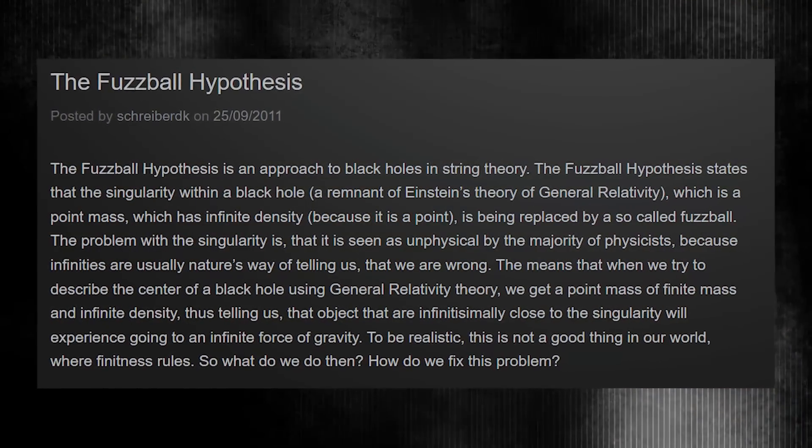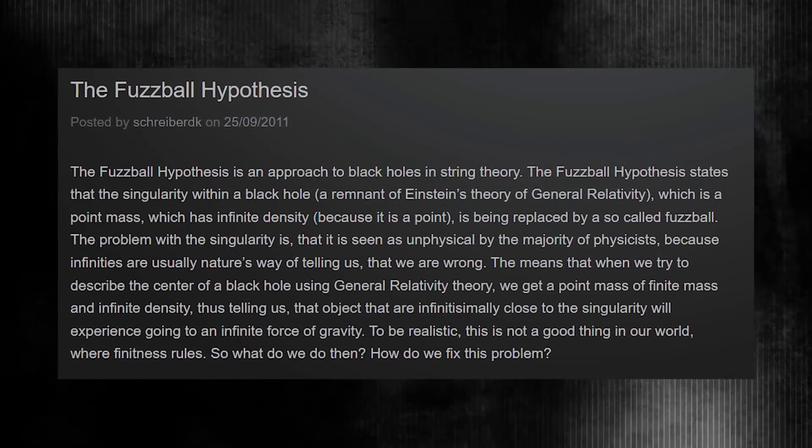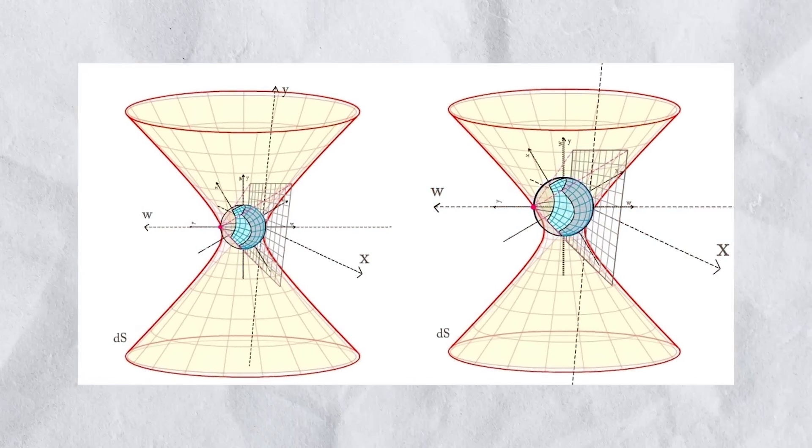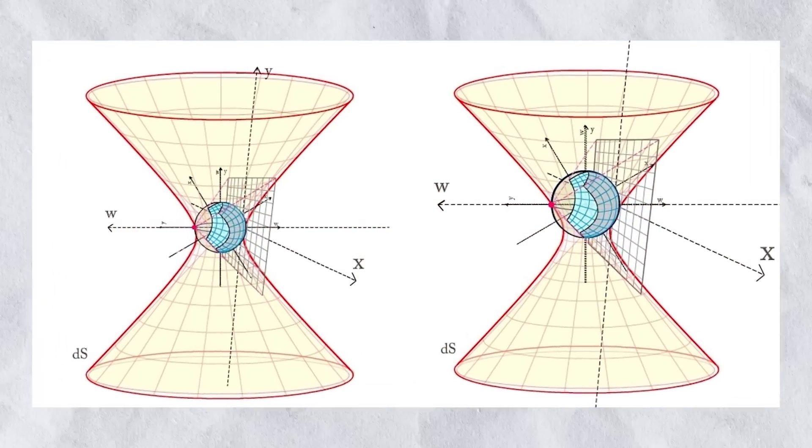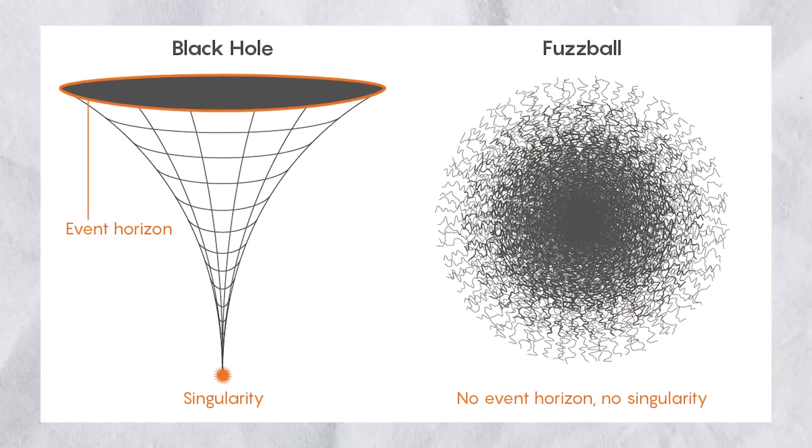Another theory is the fuzzball hypothesis, which proposes that black holes are not point-like objects, but instead consist of a dense collection of strings and other quantum particles. According to this theory, the information about the matter falling into the black hole is stored in the fuzzball, rather than being lost or destroyed.